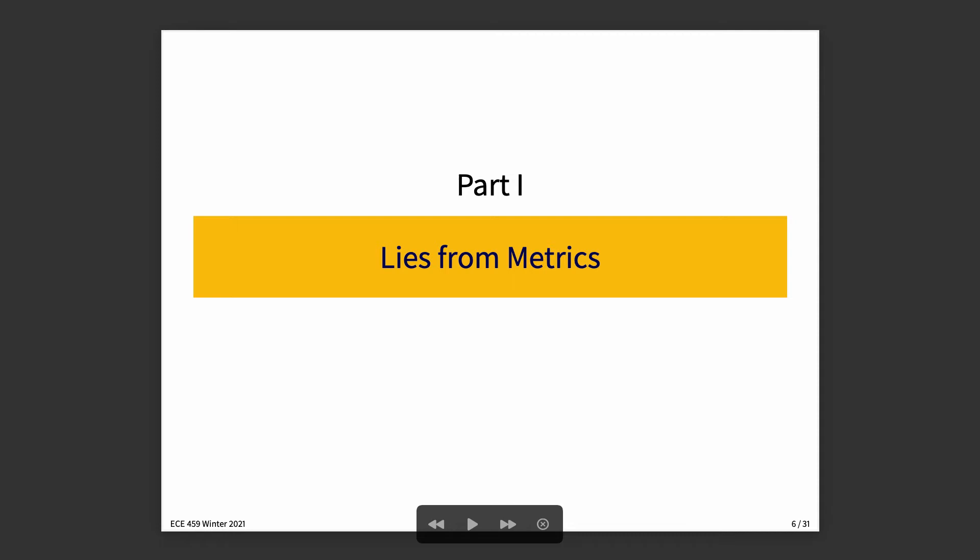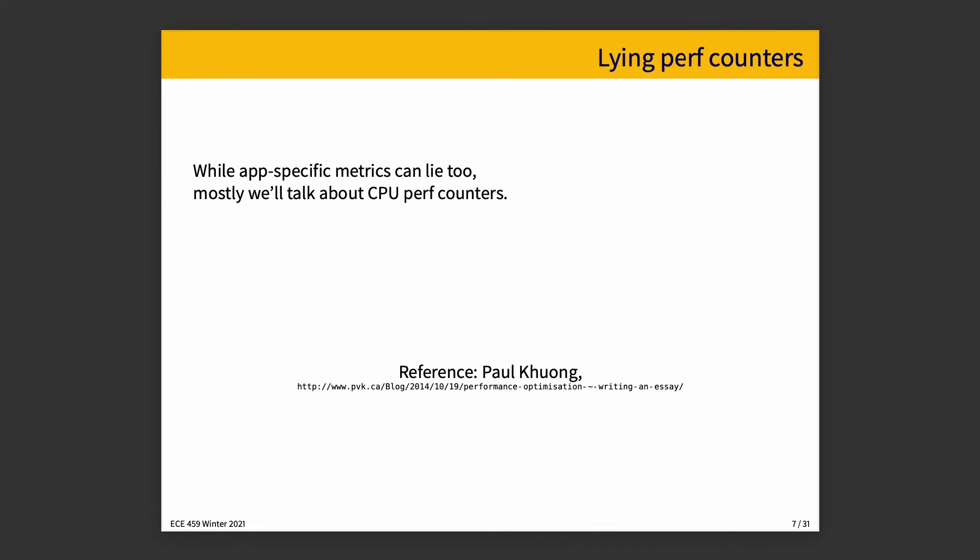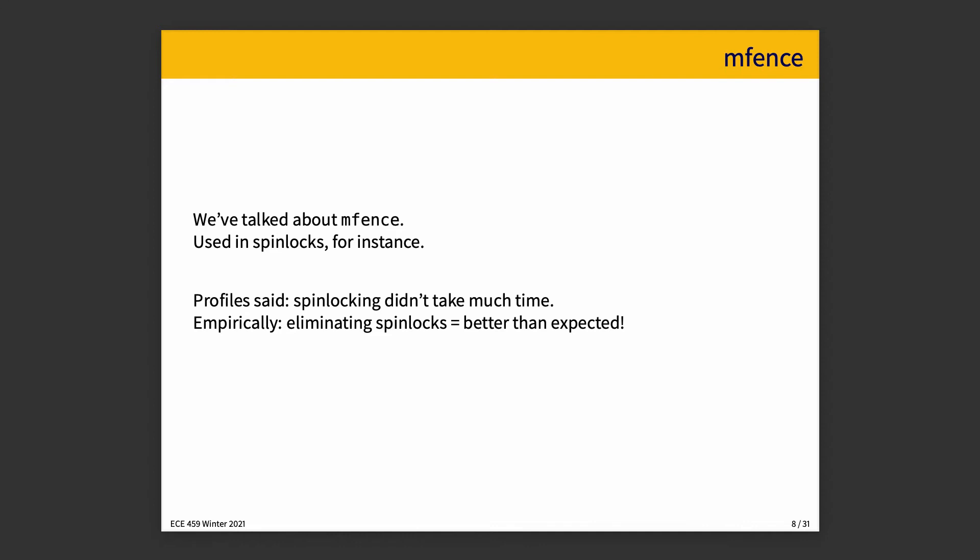And what I'm going to do now is tell you some lies, things that profilers could tell you that are data, but could be interpreted incorrectly. Part one is lies from metrics. We're going to talk about CPU performance counters. This is based off a blog post that's referenced here in the slides.